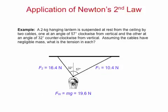And finally, we summarize. The tension in cable 1 is 10.4 newtons, the tension in cable 2 is 16.4 newtons, and the weight of the lantern, mg, is 19.6 newtons.